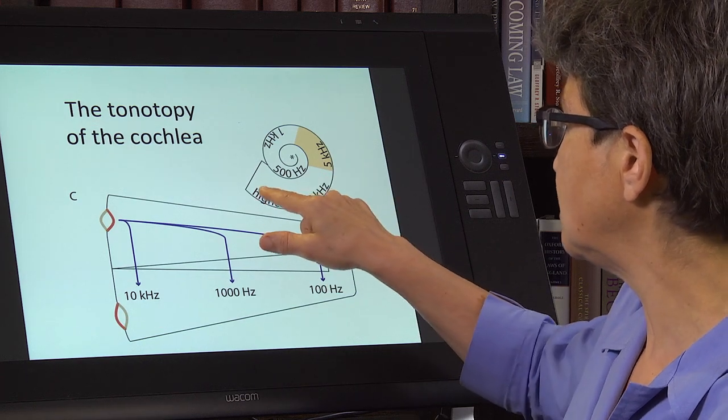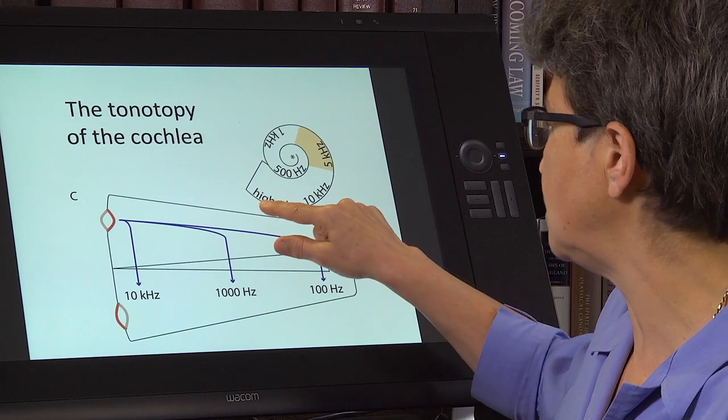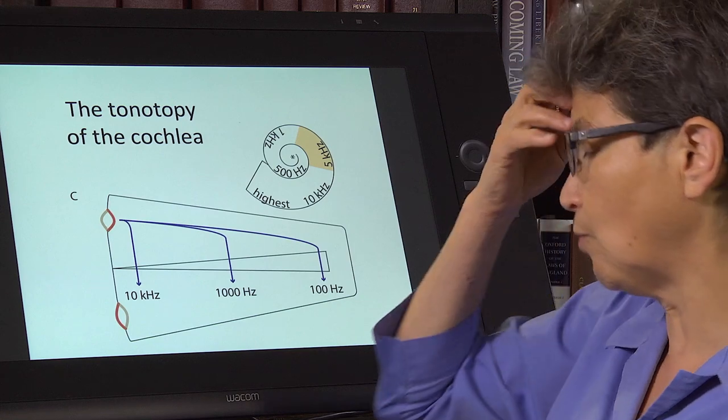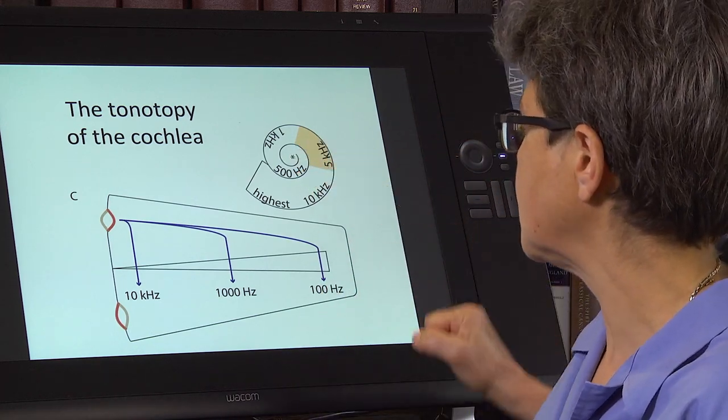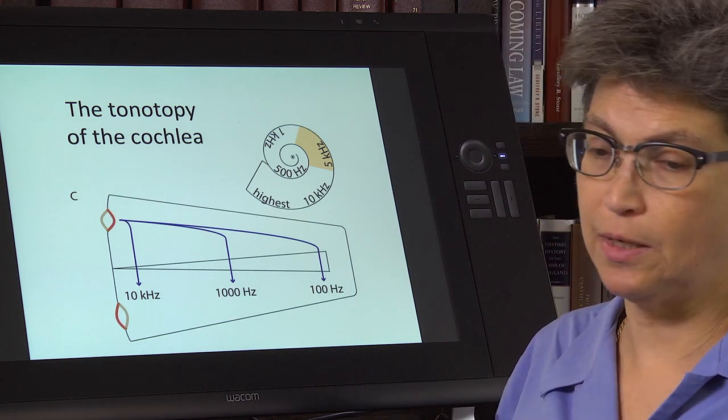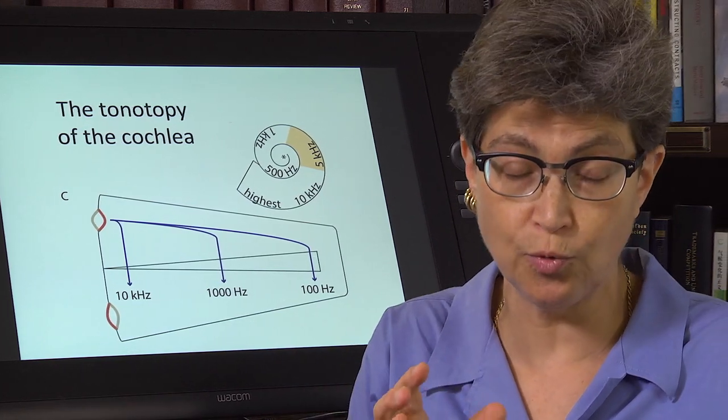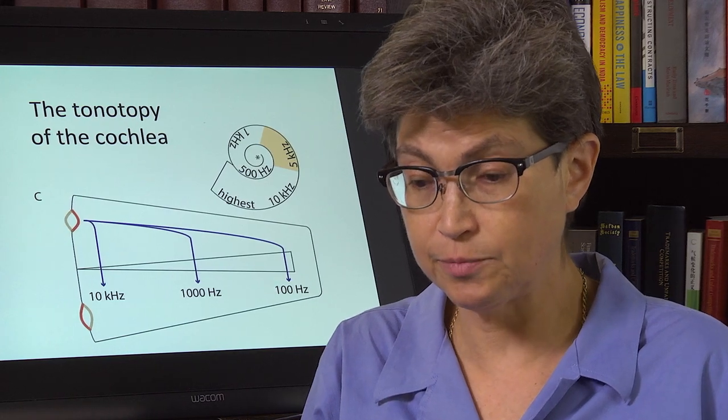And you can see this. The highest is going to be 20 kilohertz in the baby, and then going down to somewhere around under 100 hertz at the very apex. Now, Békésy did discover this, but it's not the whole story. And that's where the revolution that happened in the 20th century comes in.